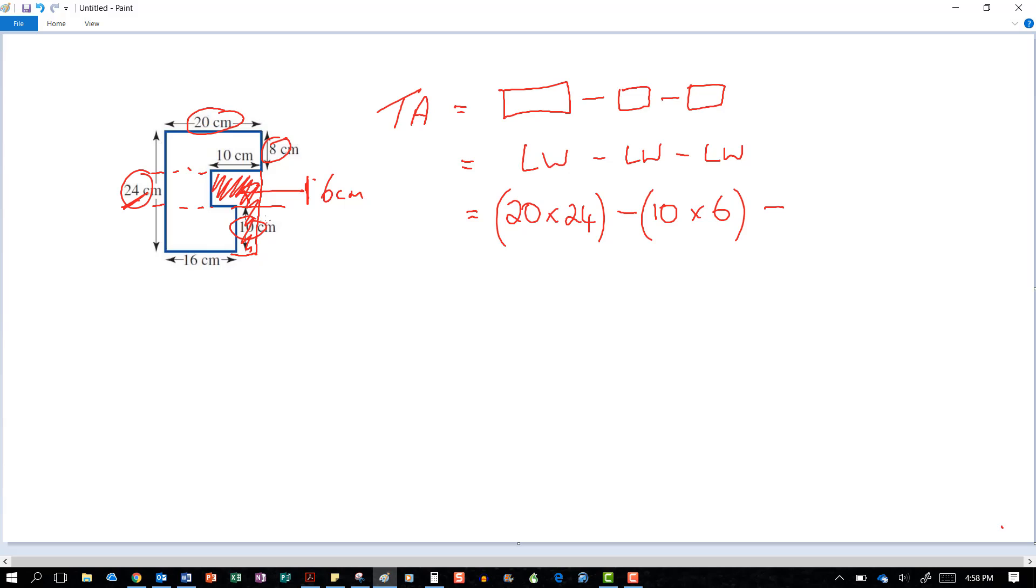And then we want to take away this rectangle here, which was 10cm. And 16 and 20 makes up the long one, so that side there is going to be 4. So minus the 10 times 4.